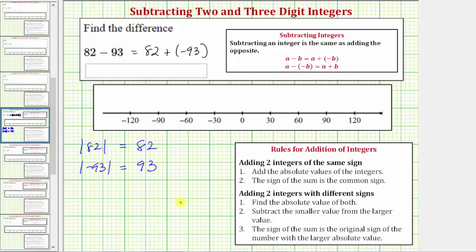Step two, we subtract the smaller value from the larger value. So we have 93 minus 82 which equals 11.